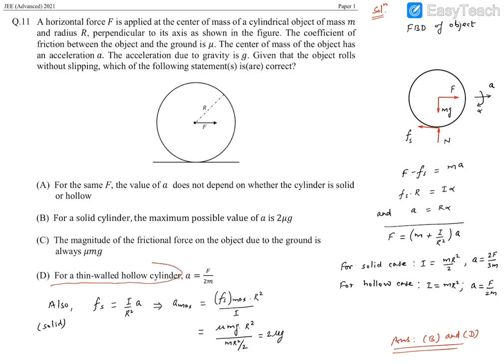Option D says for a thin-walled hollow cylinder, acceleration value is F/2m. We calculated the hollow cylinder case and it was indeed F/2m, so option D is also correct.